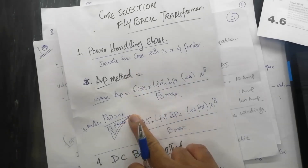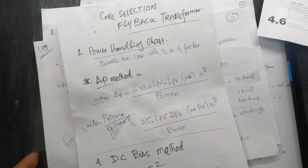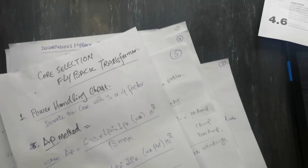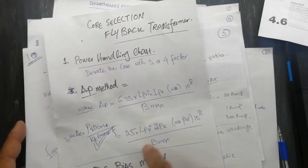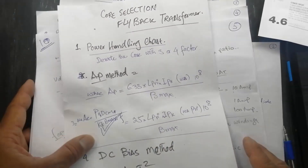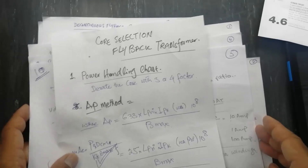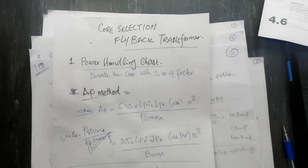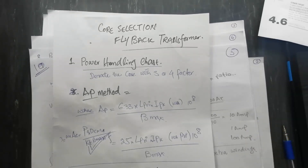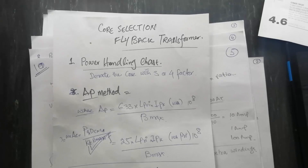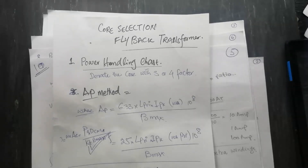We discussed four methods to select the core for a flyback transformer. Next, we will locate the core, calculate the number of turns for primary and secondary, and cover all methods for winding. I hope this video is informative. If it is useful, please like, subscribe, and share. Thanks for watching. Assalamu alaikum wa rahmatullahi wa barakatuhu.